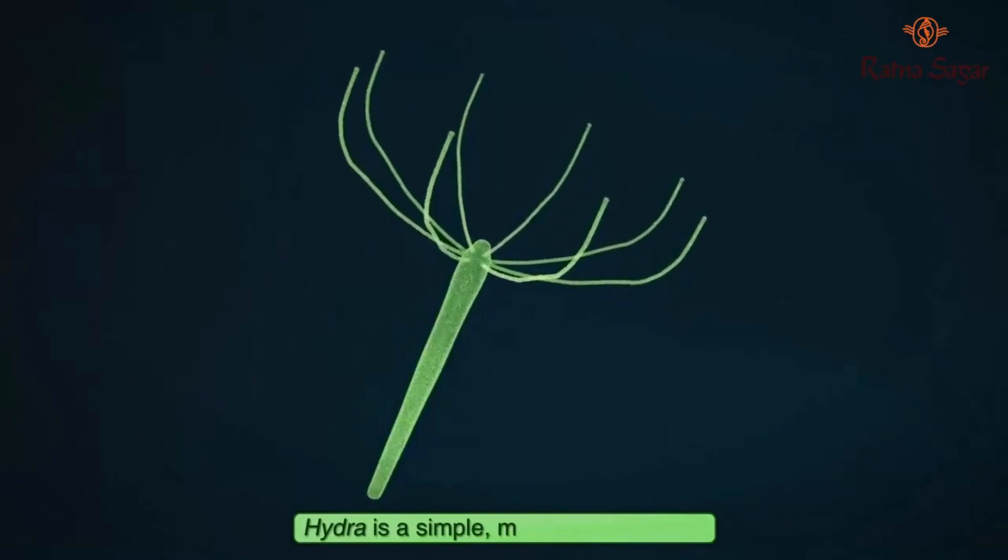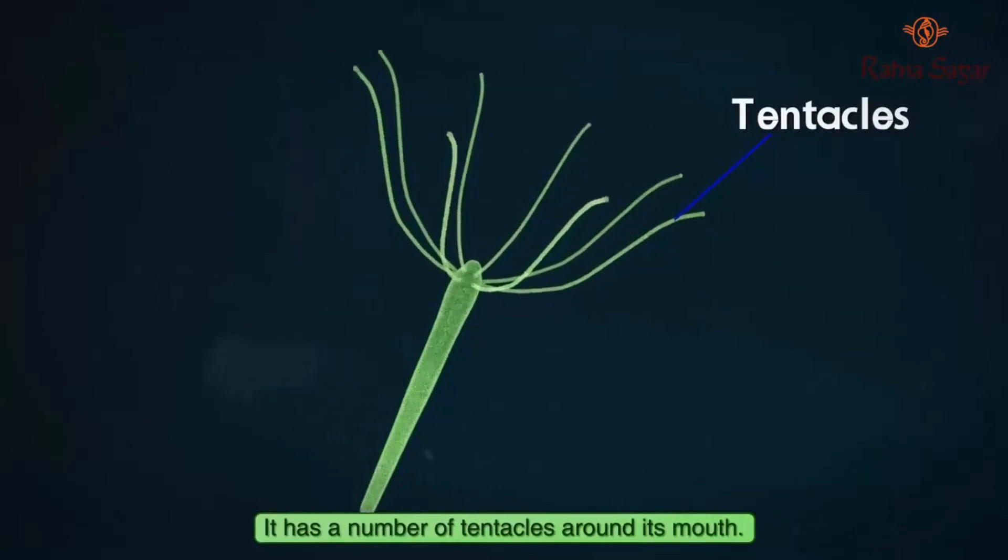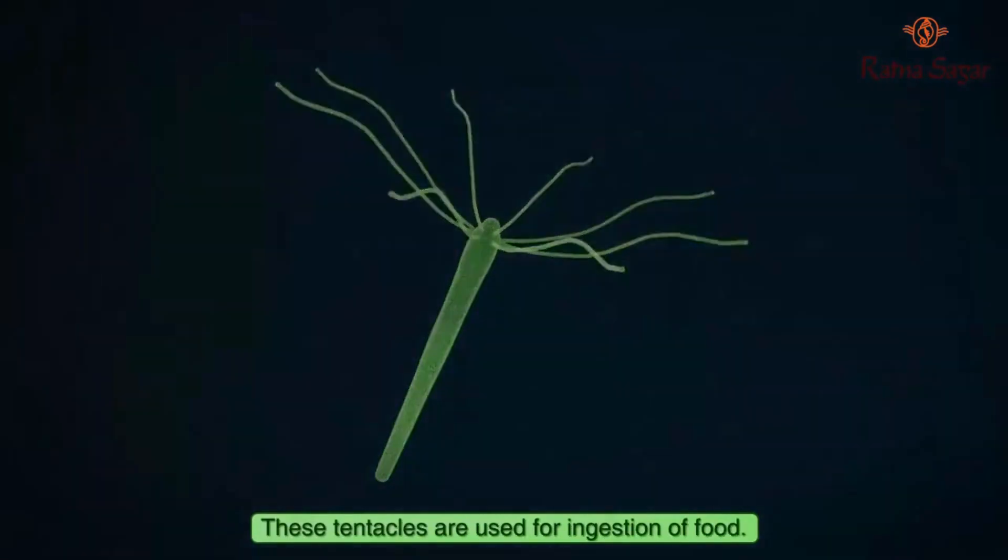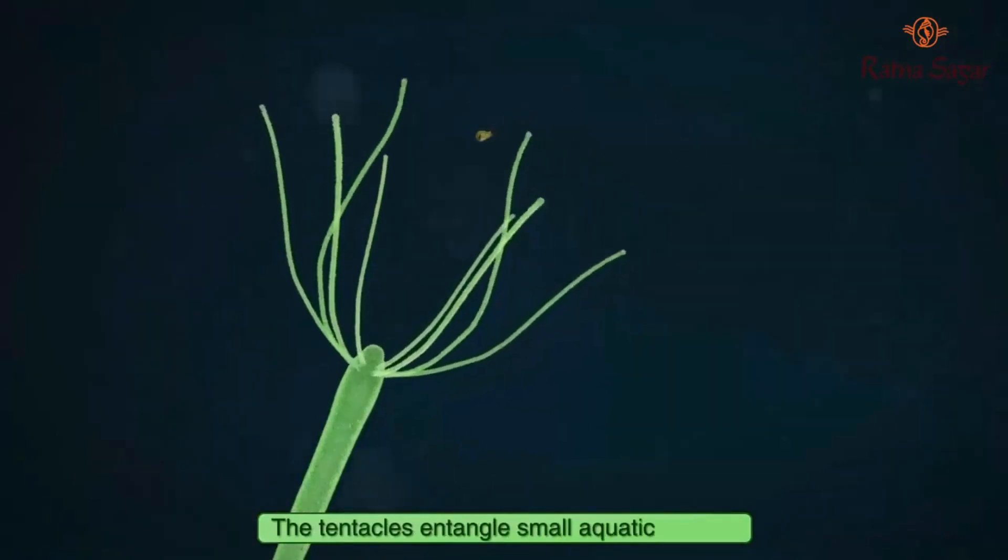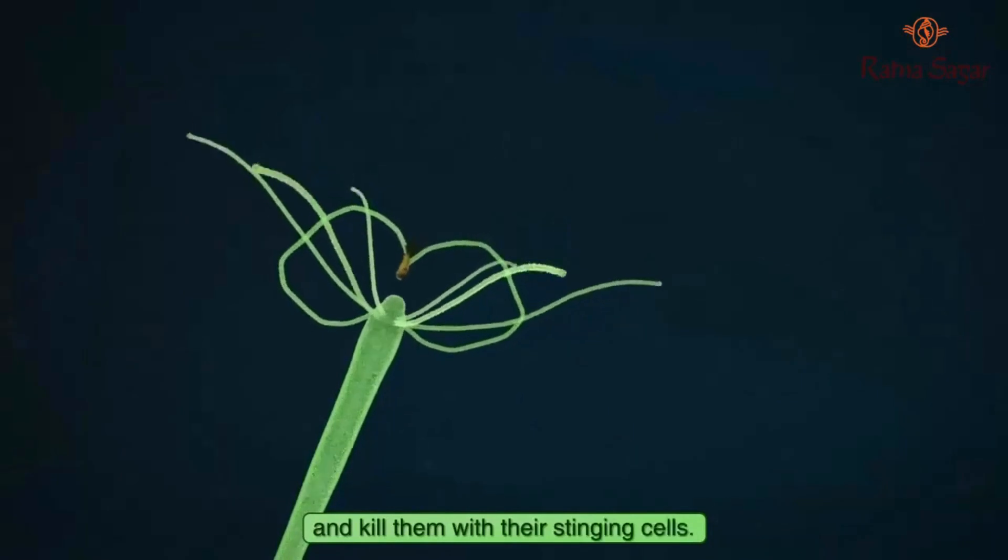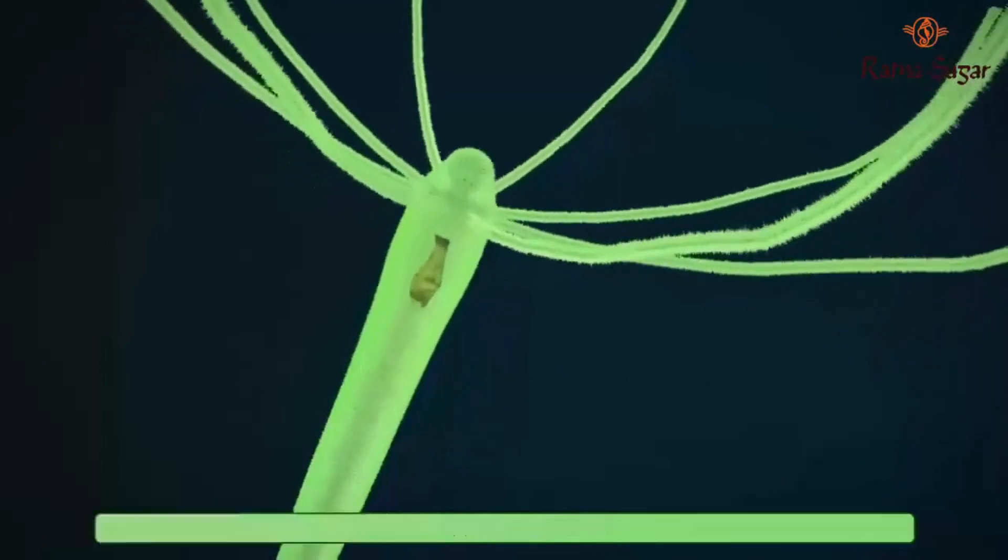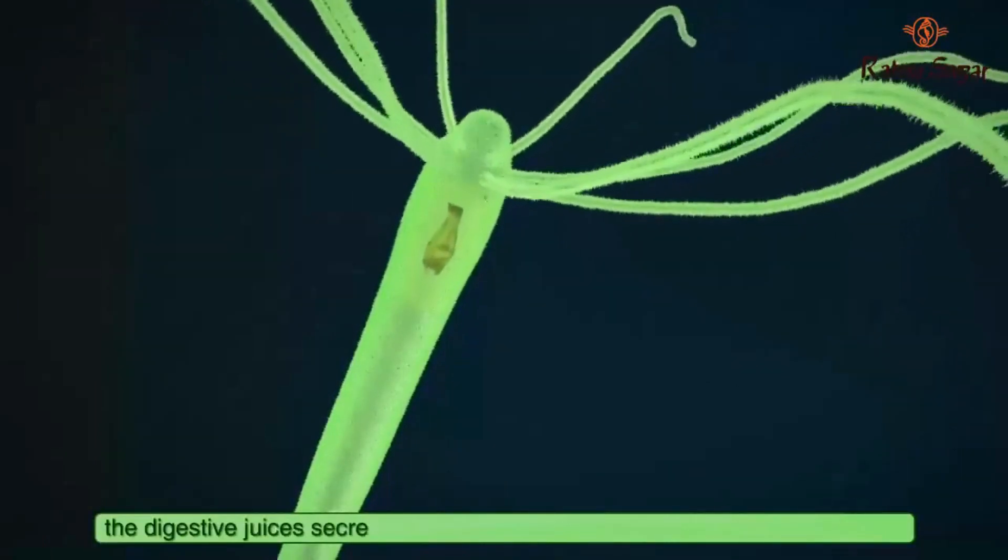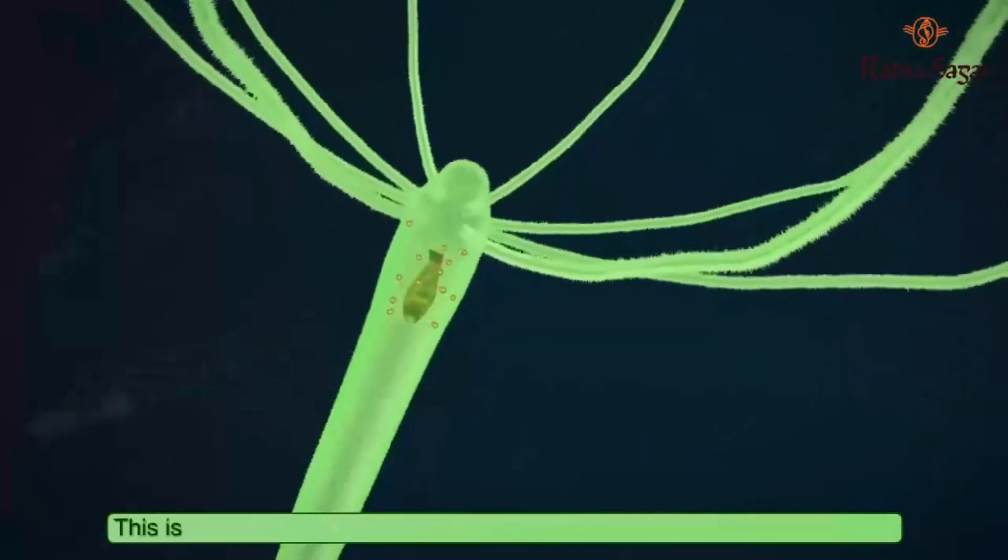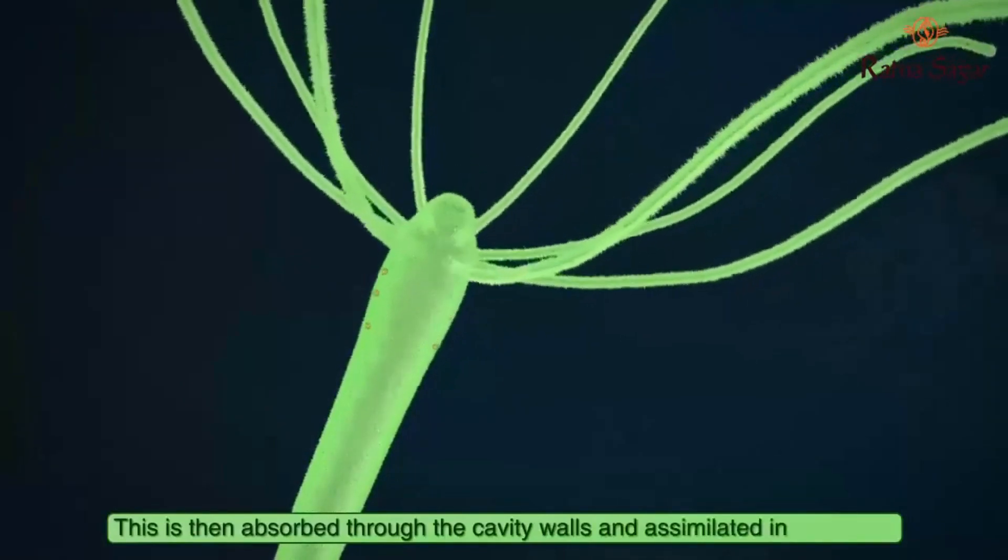Hydra is a simple multicellular animal. It has a number of tentacles around its mouth. These tentacles are used for ingestion of food. The tentacles entangle small aquatic animals and kill them with their stinging cells. They then push them into the mouth. Inside the body cavity, the digestive juices secreted by the surrounding cells help to digest the food. This is then absorbed through the cavity walls and assimilated in the cells.